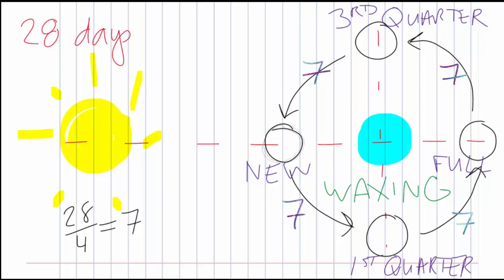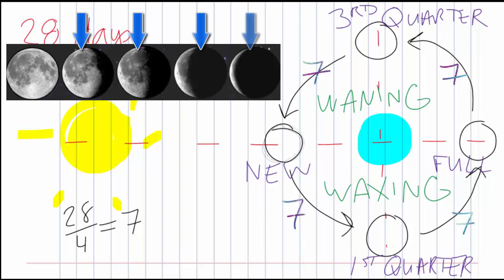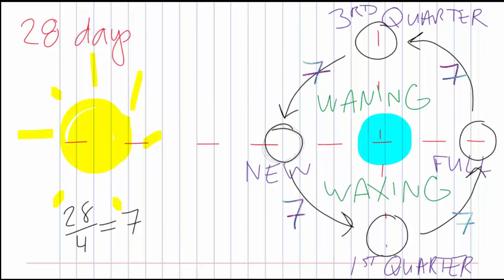Once we get to a full moon — think of werewolves, it's all lit up — every day after that it starts getting a little darker. We call that waning. So everything from new moon to full moon is waxing, and everything from full moon back to new moon is waning. There's only one other thing we need to know to be able to name all of the moon phases.